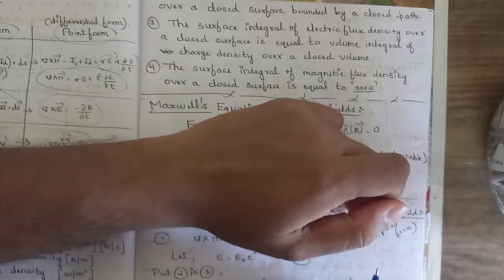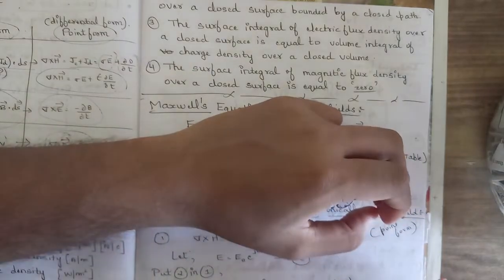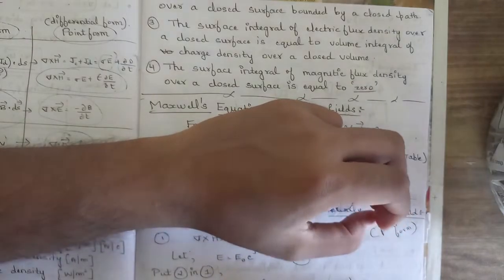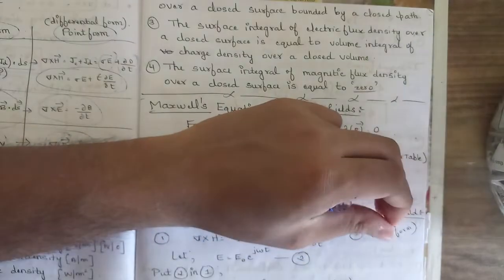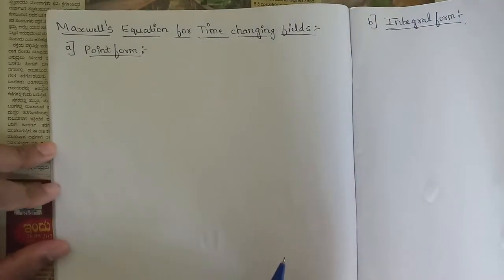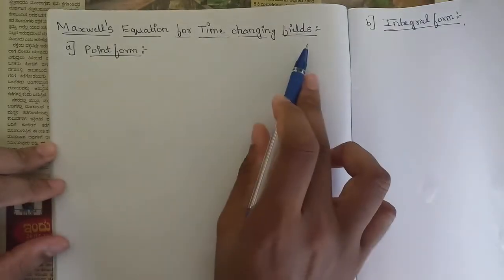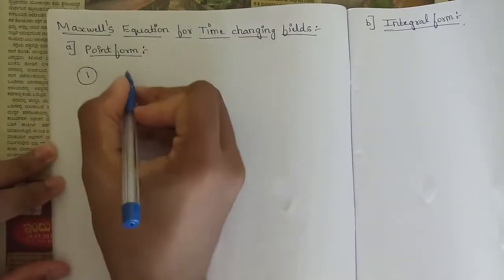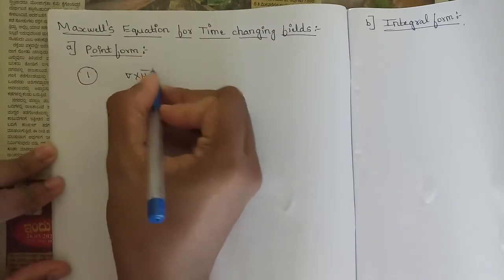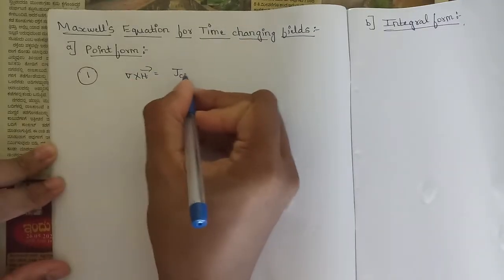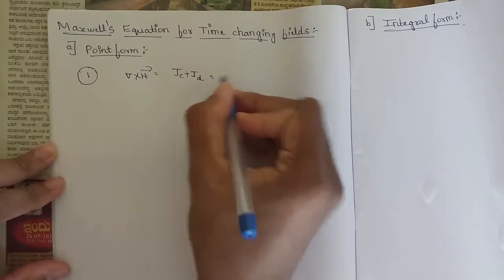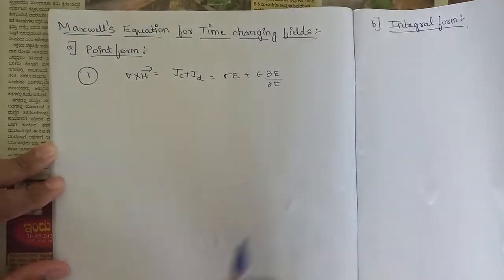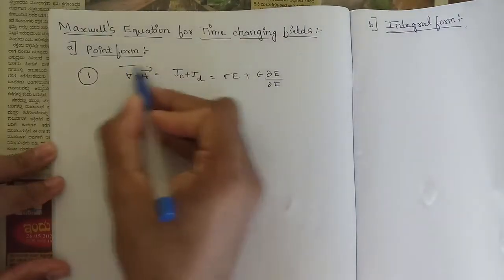Now let's discuss Maxwell's equations for time-changing fields in both point form and integral form. Using the four equations we've seen, we will derive modified equations for time-changing fields. In point form, the first equation is del cross H = Jc + Jd = σE + ε·∂E/∂t, which is the first Maxwell's equation obtained from Ampere's law.